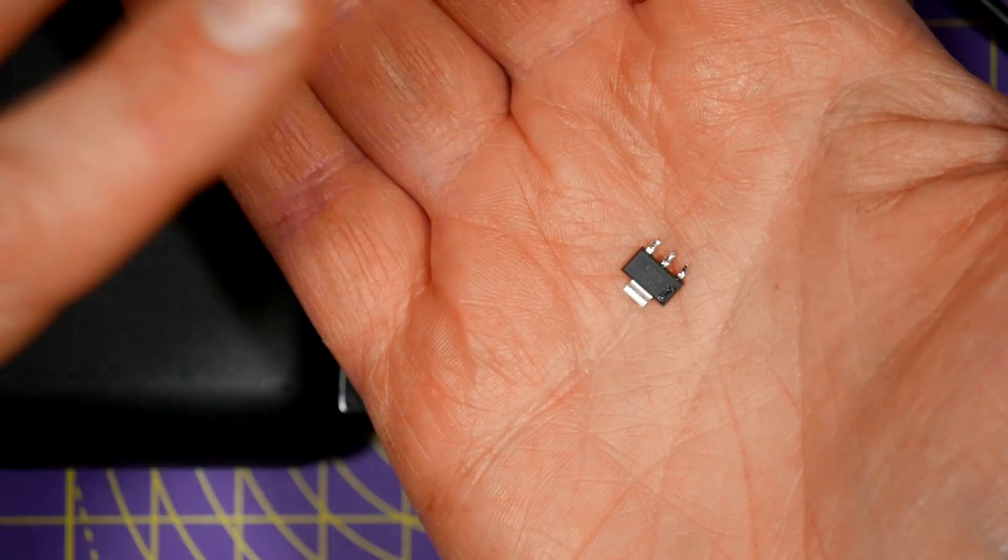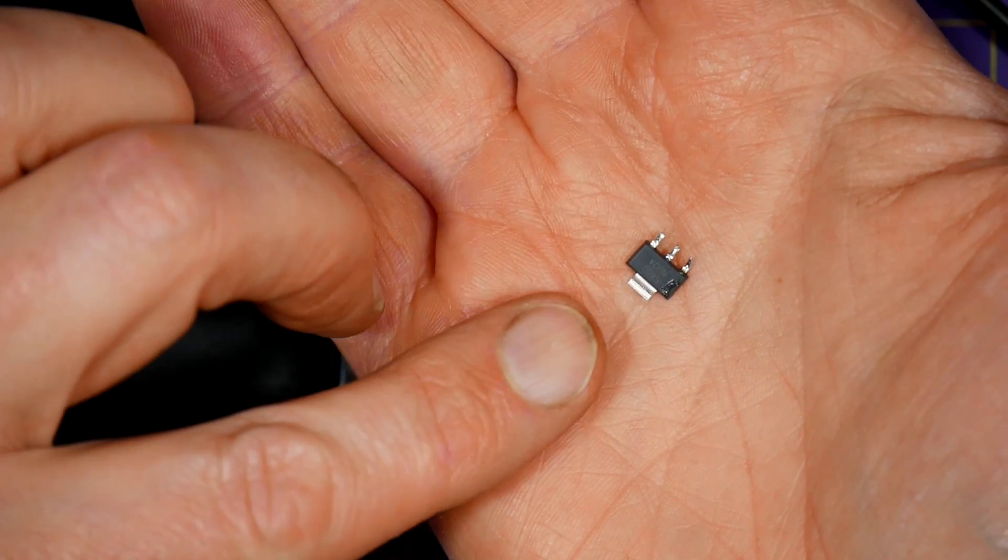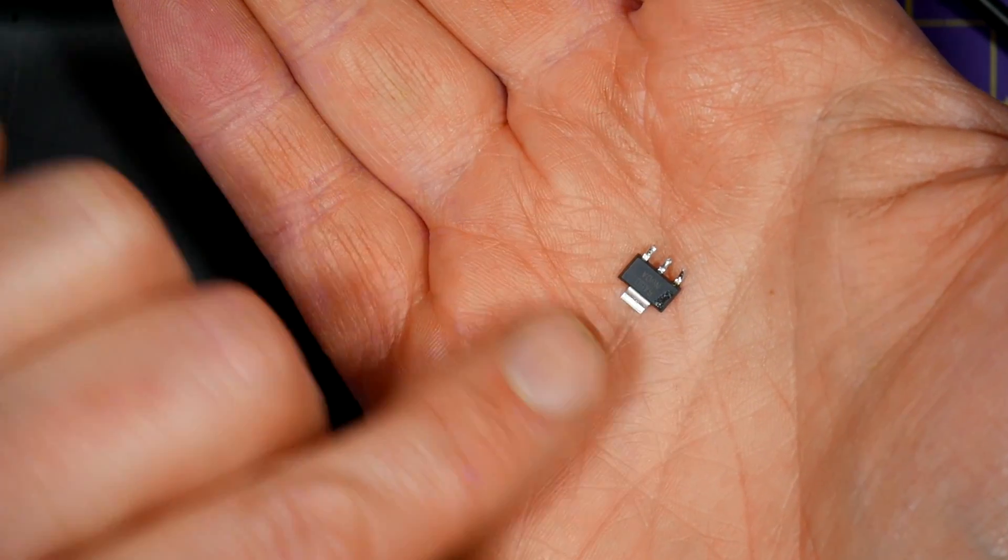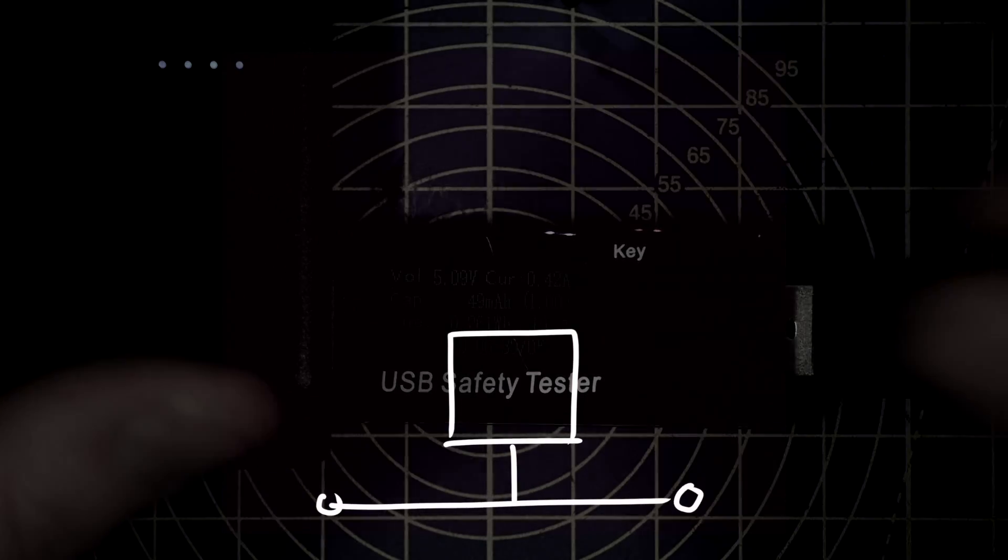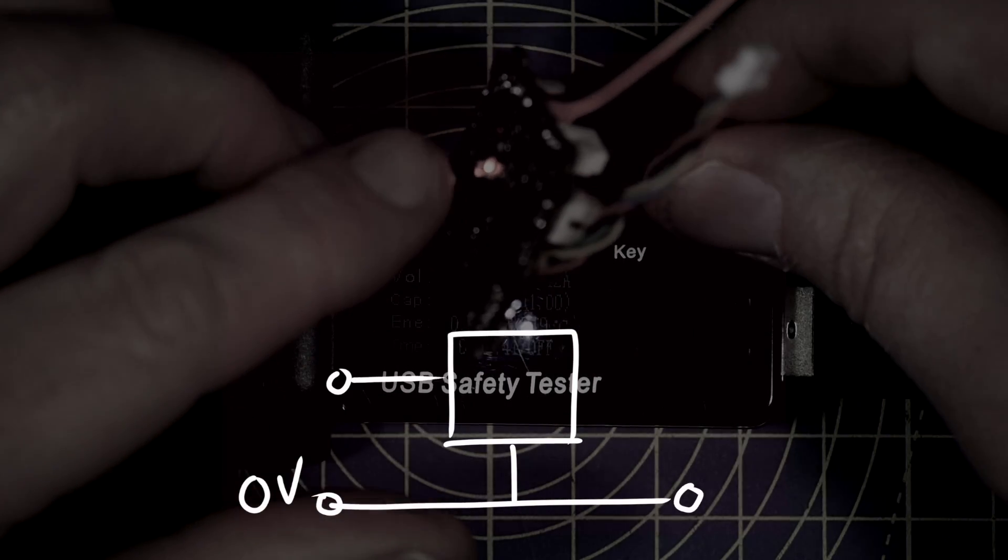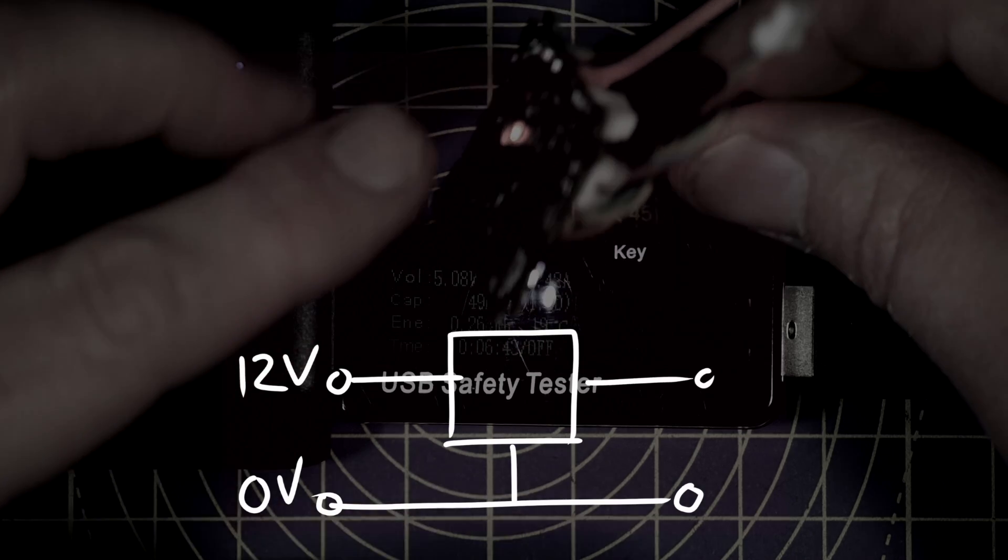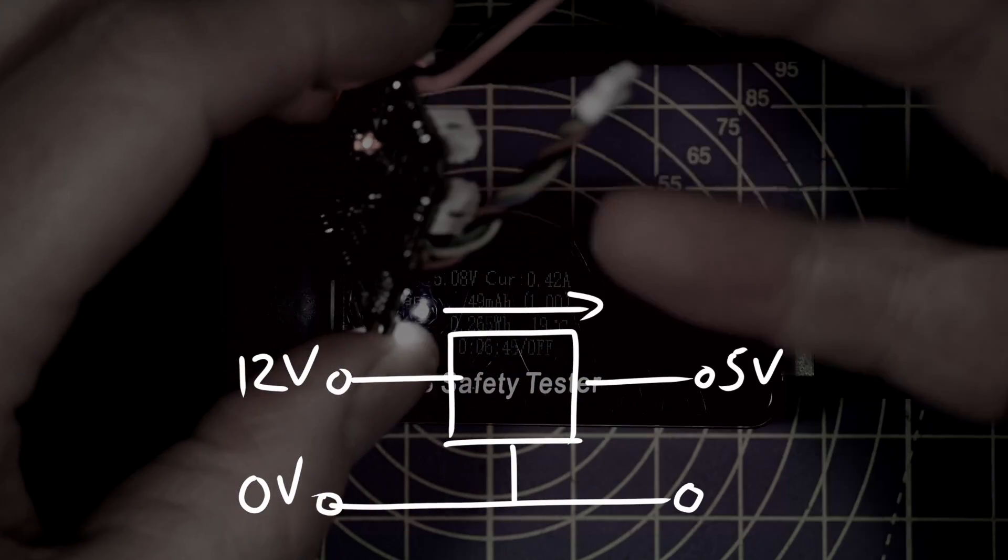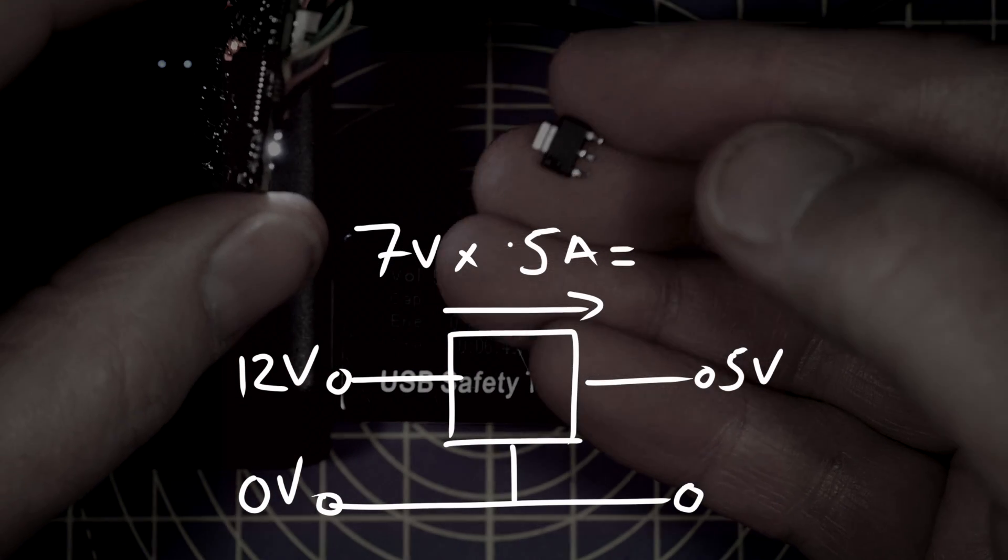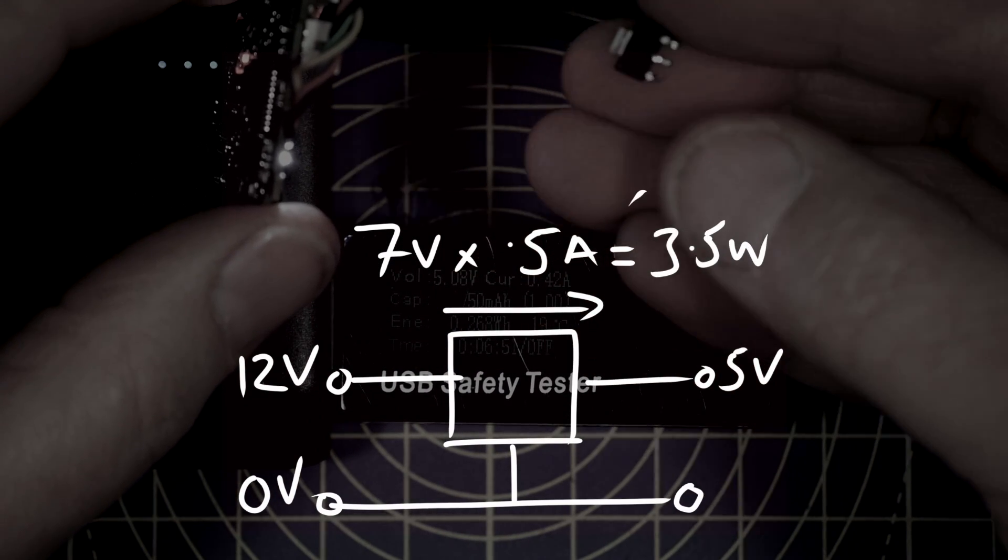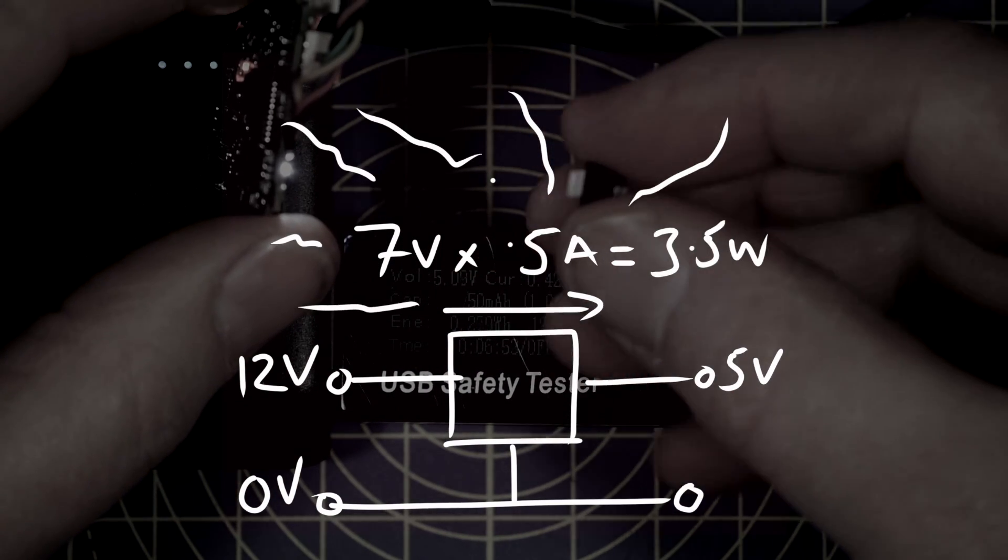For this application you can't use a linear regulator like this because the voltage across it when you're using 3S is 7 volts, and that's 12 volts minus 5 volts. So with nearly half an amp going through here, you're going to be dissipating around 3.5 watts across this device, and that's just not going to work. You'll need a massive heat sink otherwise it's just going to fry.